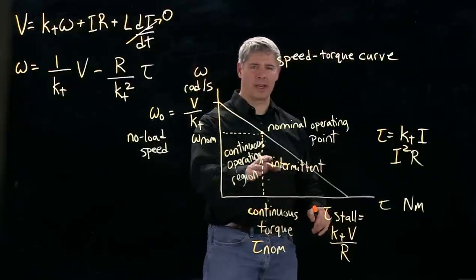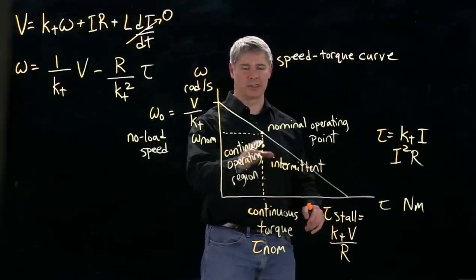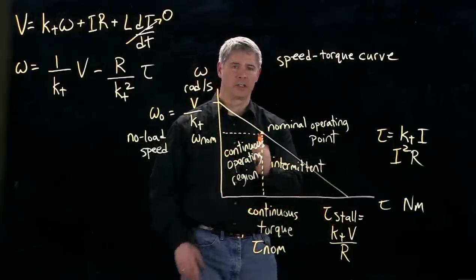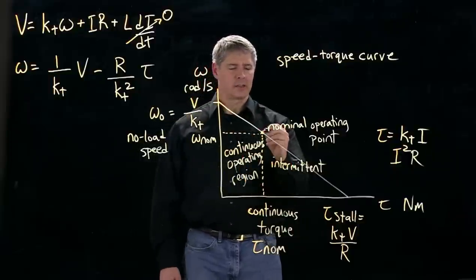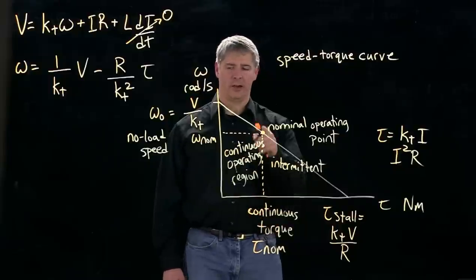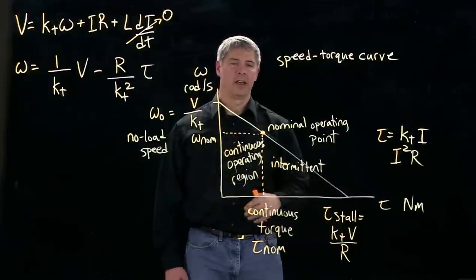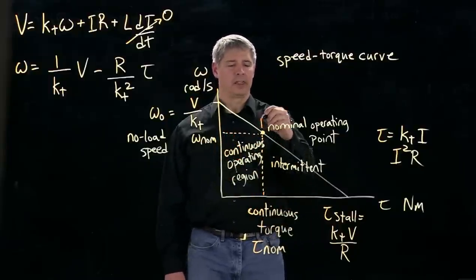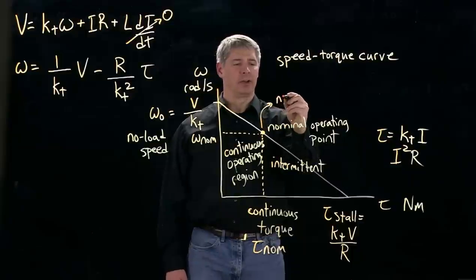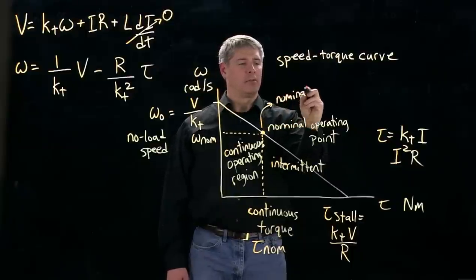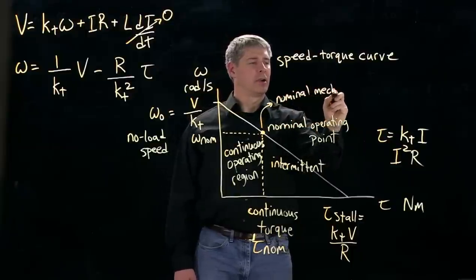So it's okay to operate occasionally in this area, but not continuously, whereas anywhere over here it's okay to operate continuously. So this nominal operating point, if we take the torque here times the angular velocity, that gives us a power, and this is the nominal mechanical power of the motor.